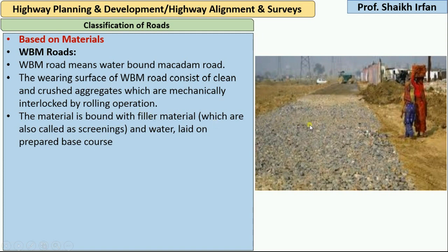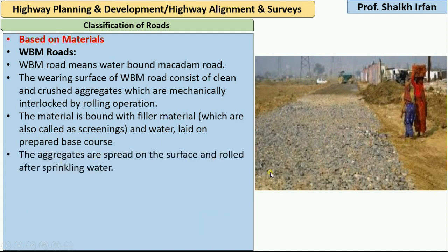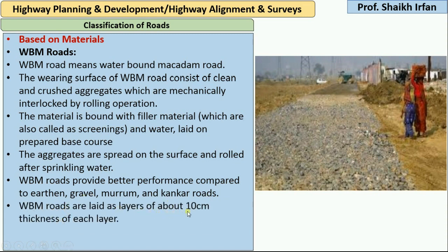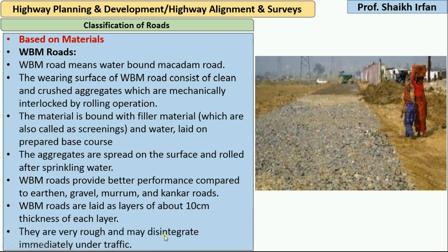First, crushed and cleaned aggregates are laid by mechanical interlocking — that is, the rolling operation of rollers. Then filler material is added to fill the voids, water is sprinkled over it, and it is laid after base course preparation. WBM roads provide better performance compared to earthen, gravel, murum, and conquer roads. They are laid in layers of about 10 cm thickness each, but are rough and may disintegrate under heavy traffic.